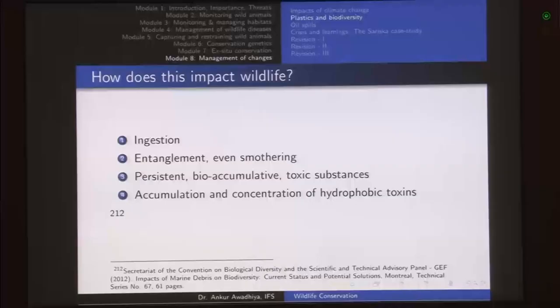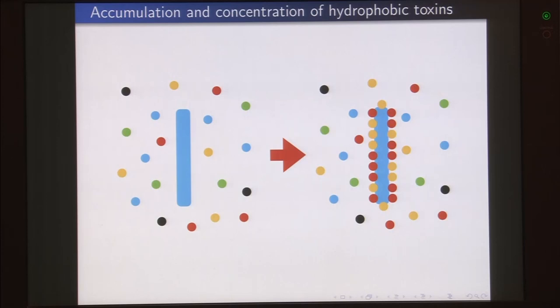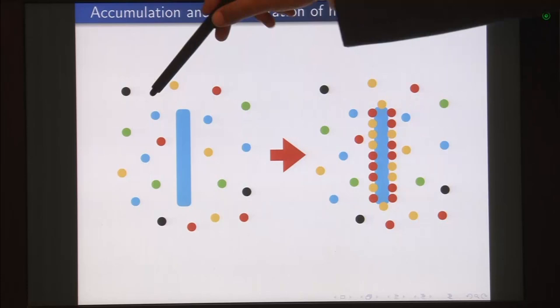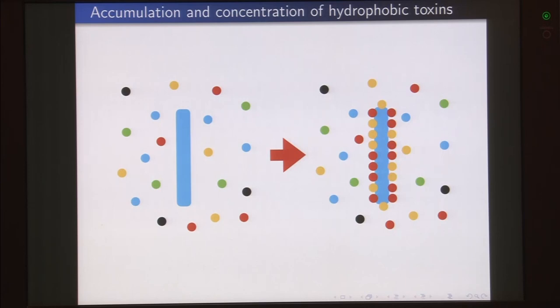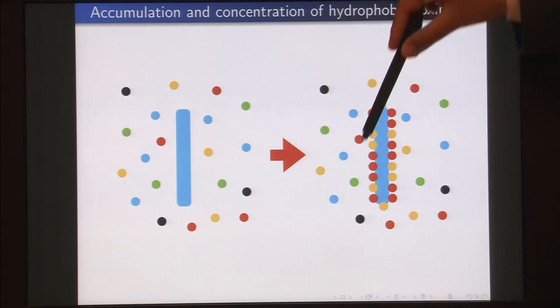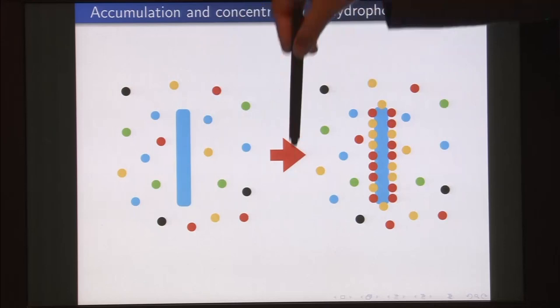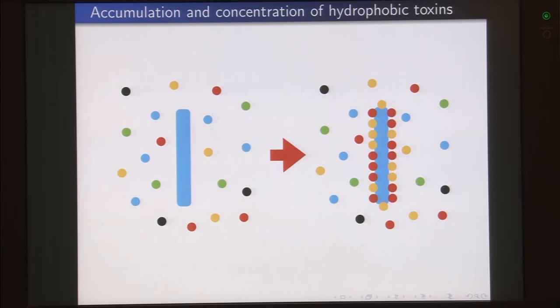Another impact is the accumulation and concentration of hydrophobic toxins. Most toxins found in natural environments — especially human-generated ones — are hydrophobic molecules that float around in water as droplets. If you put a piece of plastic in water, plastic being mostly a hydrophobic substance, most of these hydrophobic substances will move towards the plastic and stick on its surface. Essentially, the concentration of toxins on the plastic's surface increases greatly, and if any animal eats this plastic by misidentifying it for food, it would get a very heavy dose of these chemicals into its body.